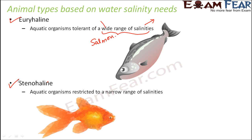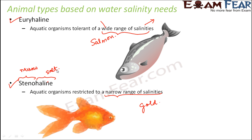Stenohaline is just the opposite — these organisms are restricted to a narrow range of salinity, so when the salinity changes their survival becomes difficult. There are many marine fish which are Stenohaline; they die in water with less salinity. If you take them out of the sea and put them into fresh water, the huge difference in salinity means they are not able to survive. One example of a Stenohaline fish is the goldfish. The word 'steno' means narrow and 'haline' means salt, so those organisms which can only survive in a narrow range of salt concentration are called Stenohaline.